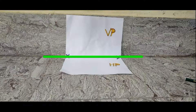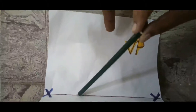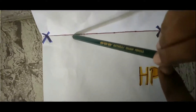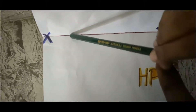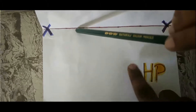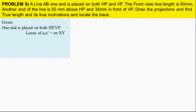Another end — point B — is 50mm above the HP and 35mm in front of the VP. The locus of point B at 35mm distance is one locus going in front of the VP.